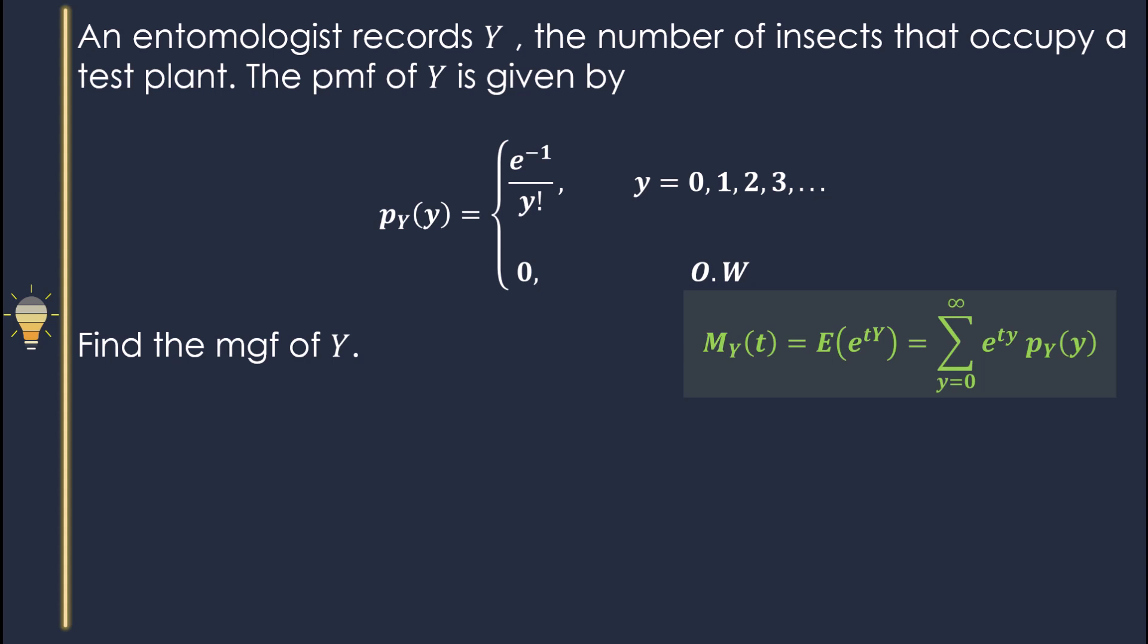Our probability mass function is e to power negative one over factorial Y. Since e to power negative one is a constant, you can pull it out from the summation.